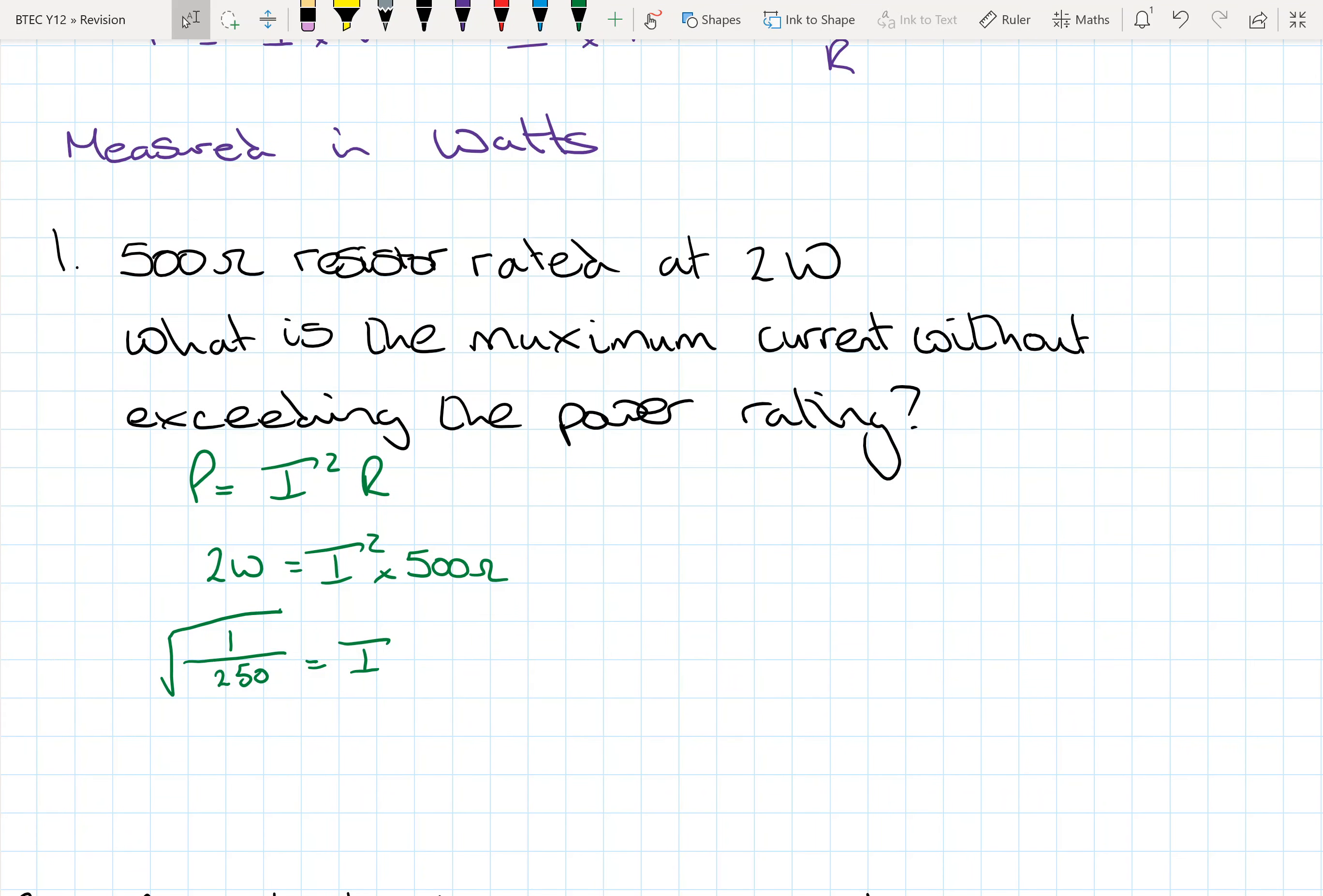Okay, a bit of rearranging, and then we end up with our current is equal to 63.24 times by 10 to the minus 3 amps, or as we could actually write it, 63.24 milliamps.